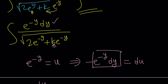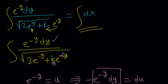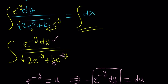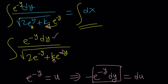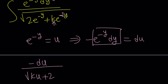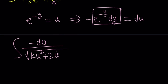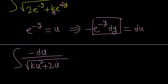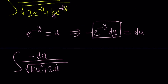So that's going to give me k times u squared plus 2u under the square root. For simplicity's sake, allow me to set k equals 1, because otherwise we're going to have to deal with crazy cases. So if k equals 1, then we get negative du over the square root of u squared plus 2u.